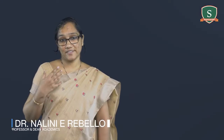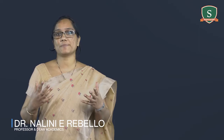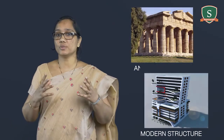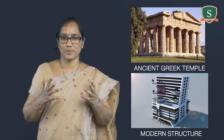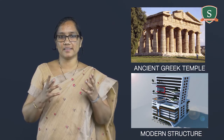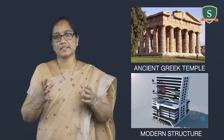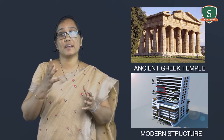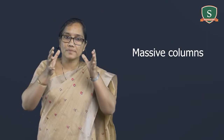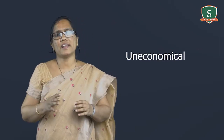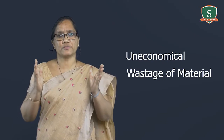In ancient times, structures and even aircrafts were built with no much planning in regard to their efficiency and cost. Consider the two images shown on your screen — one is the ancient Greek temple and the other is a modern structure. You can see the amount of materials that has gone into each of them and thereby the cost. Ancient temples in Greece and also India had massive columns with an overall massive structure, which was uneconomical and a lot of material was used for the construction.